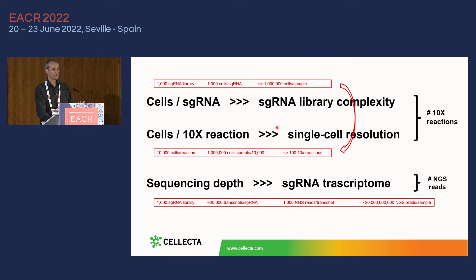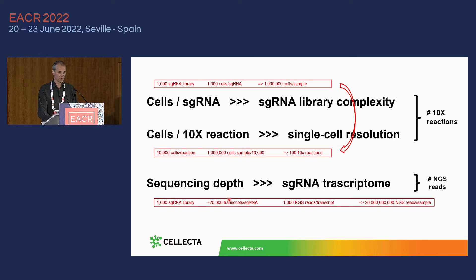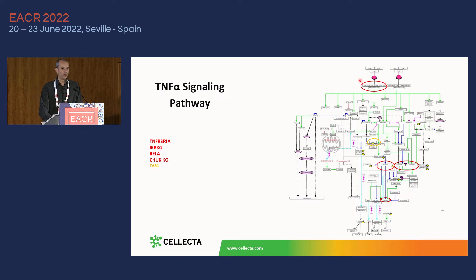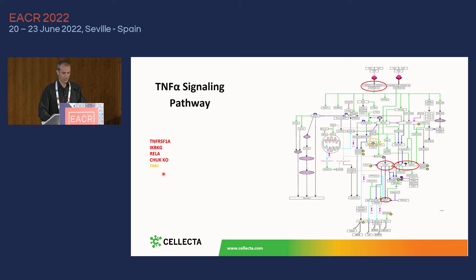What we set out to find in the experiment I'm talking about today is the minimum number of cells needed, the maximum number of cells that can be loaded per reaction, and the minimum number of reads needed per sgRNA to get reliable data. To do that, we ran a PerturbSeq screen in a well-defined system: the transcriptional response to TNF-alpha treatment. We built a library with well-known positive control effectors — four genes in the pathway — a weak effector to test sensitivity, and irrelevant genes and non-targeting sgRNAs as negative controls.